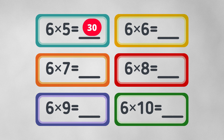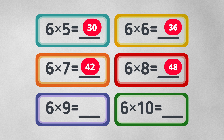Six times six equals thirty-six. Six times seven equals forty-two. Six times eight equals forty-eight. Six times nine equals fifty-four. Six times ten equals sixty.